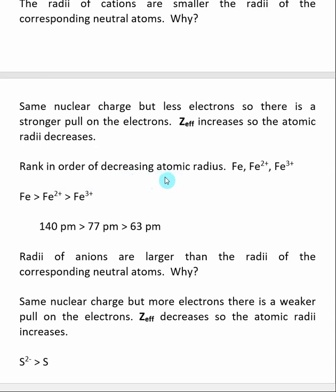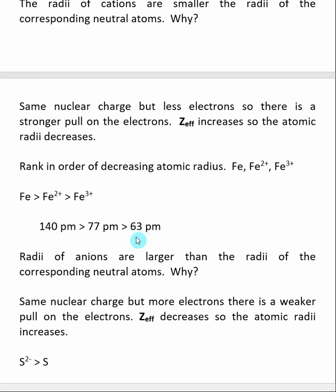For example, ordering Fe, Fe2+, and Fe3+ in decreasing atomic radius: the largest is Fe, then Fe2+, then Fe3+. The number of protons in iron remains the same — we're only removing electrons. When we get to Fe3+, there are fewer electrons, so there is a stronger interaction between the remaining electrons and the iron nucleus. That causes the electrons and nucleus to be pulled tighter together, making the atomic radius smaller. Experimental data confirms that Fe3+ is by far the smallest of the three. In general, cations are smaller than neutral atoms.